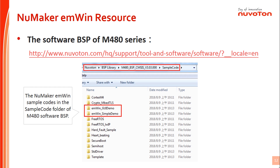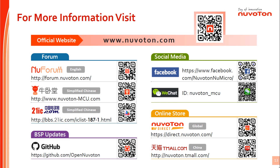For the next topic, we will introduce how to implement EMWin on the NuMaker N487. If you would like to know more about Nuvoton, you can visit the official website at www.nuvoton.com. For development problems or technical content, you can go to Nuvoton and 21IC, or visit the Nuvoton official Facebook fan page for first-hand product information. To buy development boards, tools, or ICs, you can go to Nuvoton Direct. The latest BSP packages and software tools can be downloaded from OpenNuvoton GitHub.